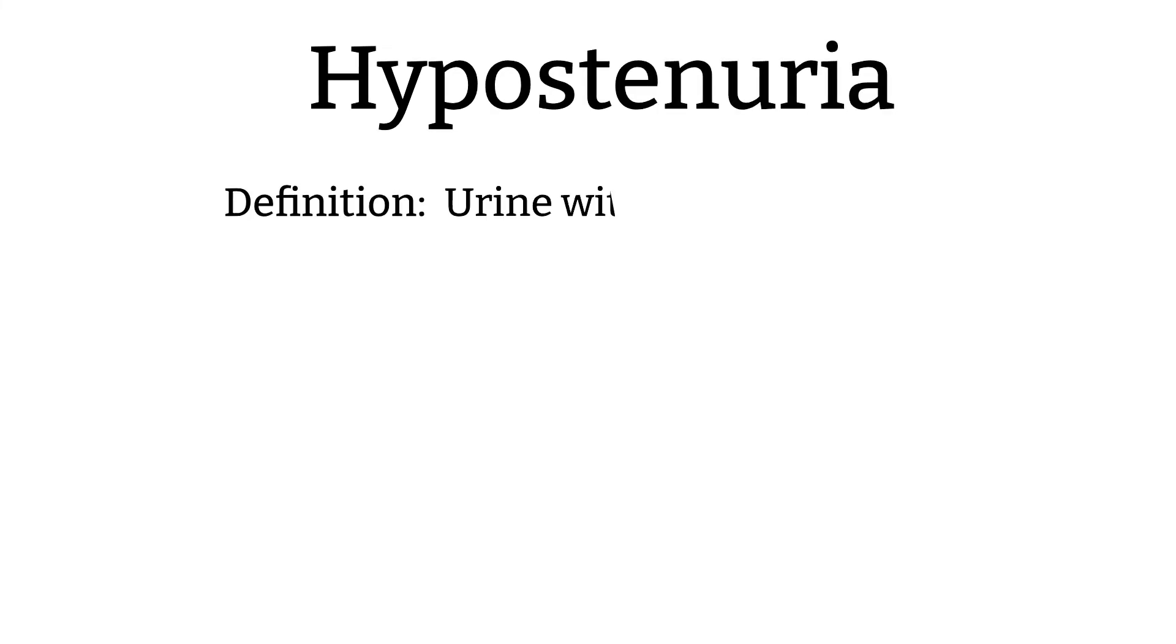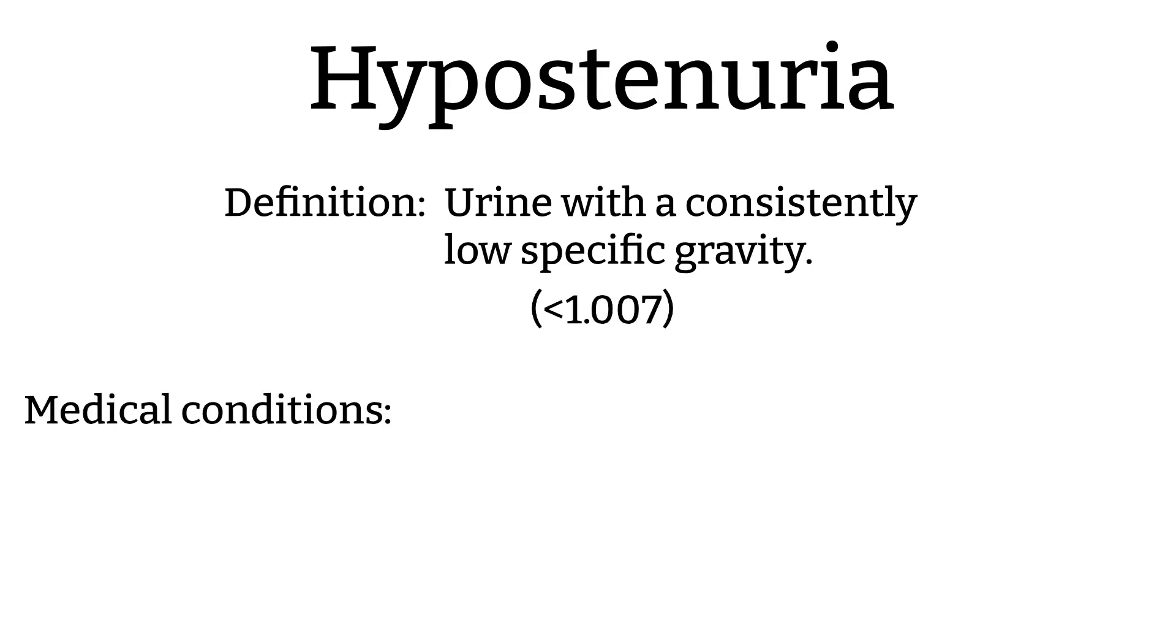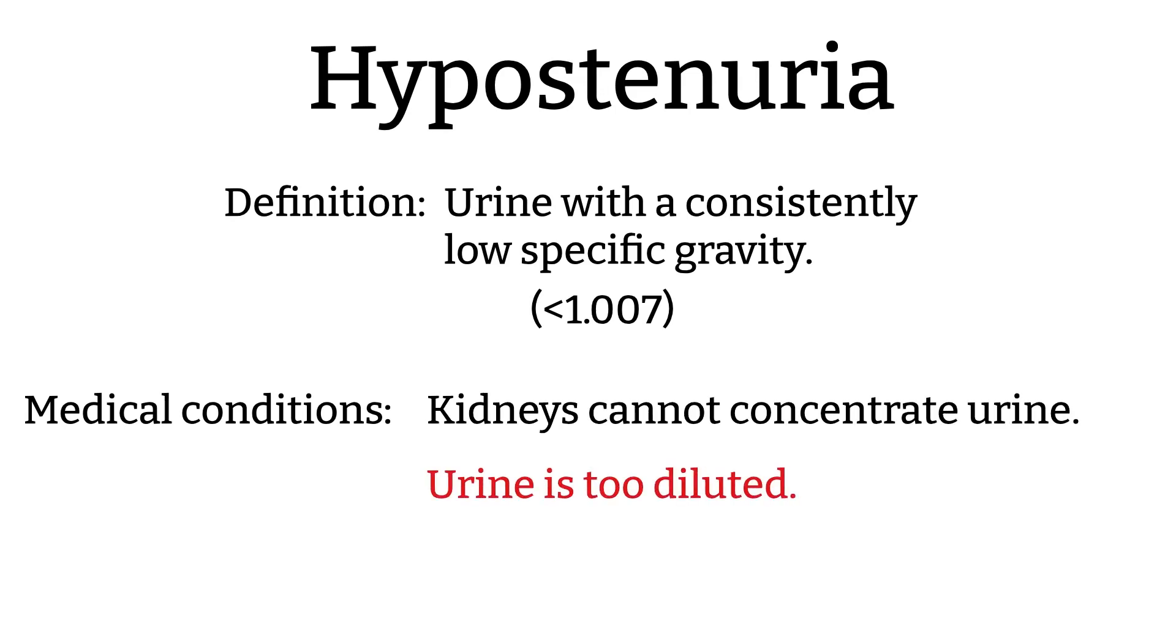Hyposthenuria is used to describe a urine with a consistently low specific gravity. Hyposthenuria is a concentration problem, so the urine is consistently diluted. This condition can be found in patients with diabetes insipidus. In patients with diabetes insipidus, the urine specific gravity is really low because in this disease, there is a deficiency or resistance of ADH.